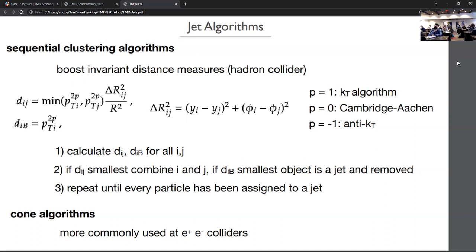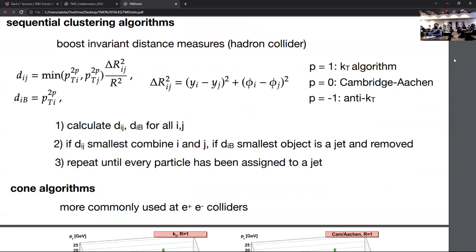You calculate all the D_ij's and D_iB's for your particles. You find the smallest one — if it's a pair i and j, you combine those into one particle by combining the momenta, so the list gets smaller. If D_iB is the smallest, you call that object a jet and remove it from the list. You keep doing this until every particle has been assigned to a jet. There are also cone algorithms, mentioned in chapter nine, which are more commonly used in e+e- colliders.